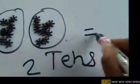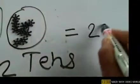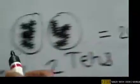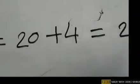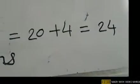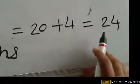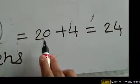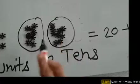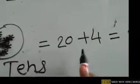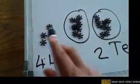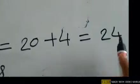So how do we write this? 2 tens means 20, plus these 4 single units. So 4 units is equal to 24. I got the number 24. In 24 there are 2 tens and 4 single units. 20 plus 4 equals 24.